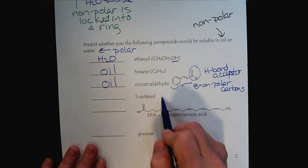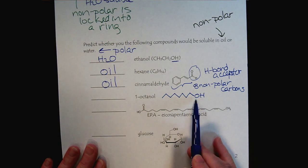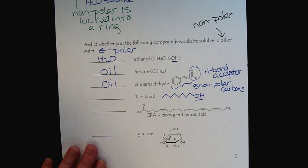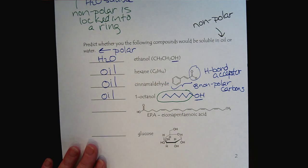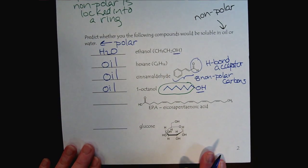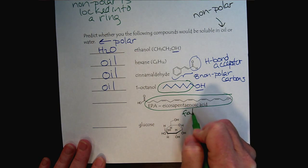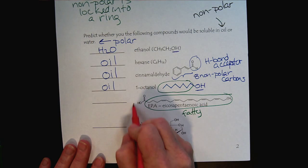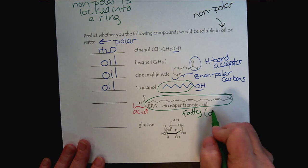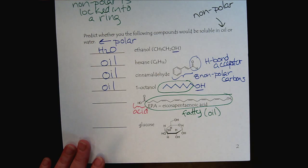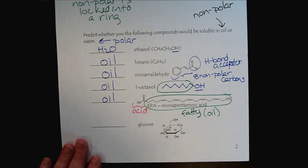1-Octanol is an eight-carbon chain with an alcohol group. Not only is it an H-bond acceptor, but also an H-bond donor. But once again, the nonpolar chain is too long, so octanol would prefer oil as well. Next we have a fatty acid — described as 'fatty' for the hydrocarbon chain and 'acid' for the carboxylic acid end. Think about fats and oils: the large hydrophobic carbon chain wants to interact with oil, while the carboxylic acid part wants the water.